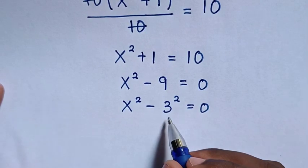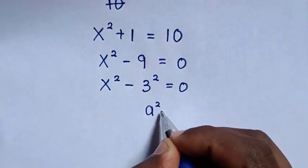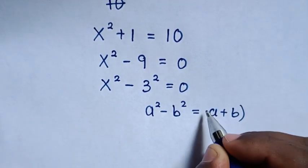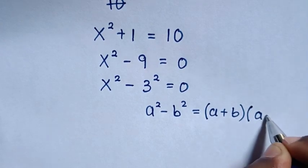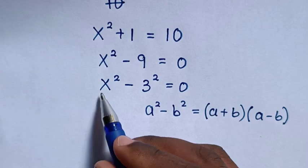Then this part is in form of a perfect square, so we'll apply the rule a² minus b² is equal to (a + b)(a - b). So when you compare a² with x²,